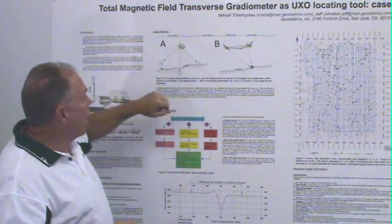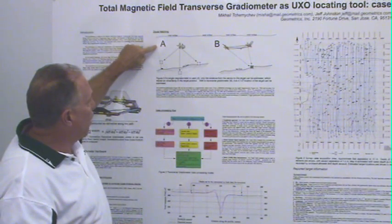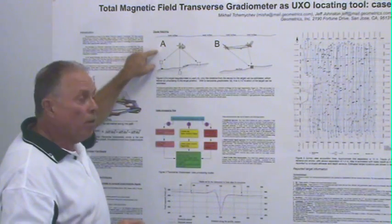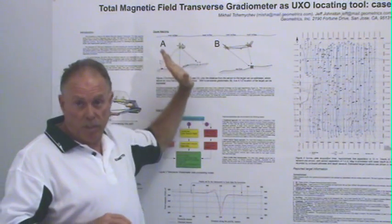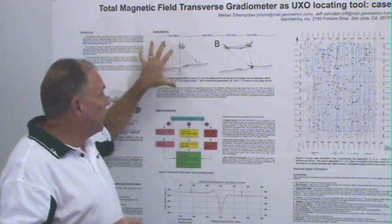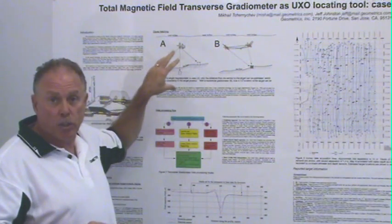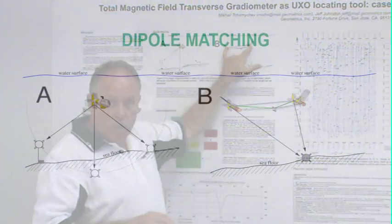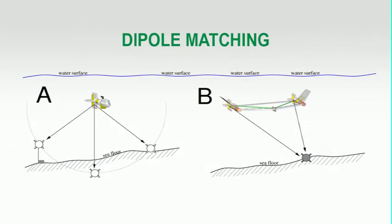When we have a single magnetometer, we know that the target is on a hemisphere at a given distance from the sensor. In other words, the inversion process is omnidirectional. We're not sure where it is on that hemisphere. But when we have two sensors, we have two hemispheres which intersect at a given position.